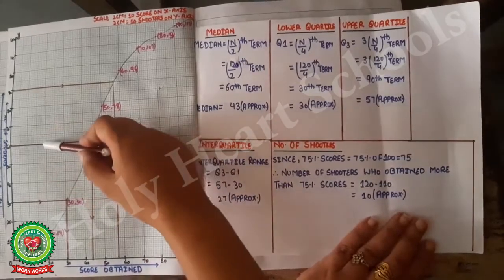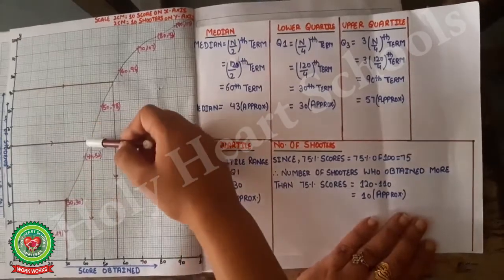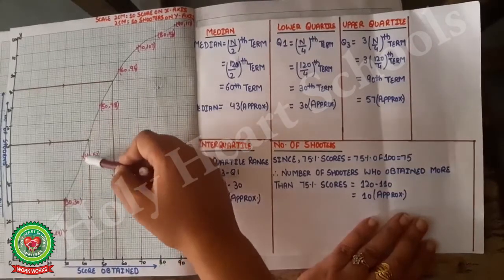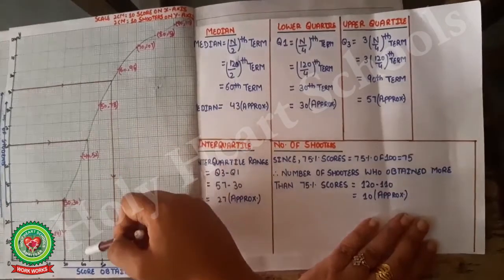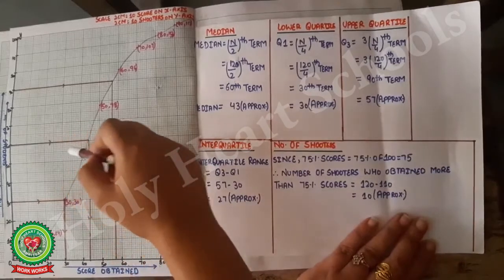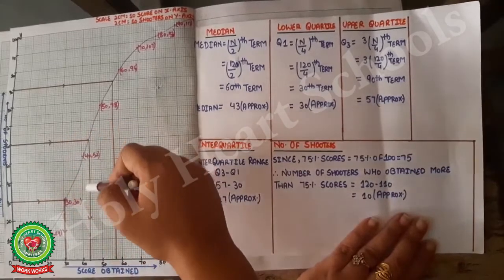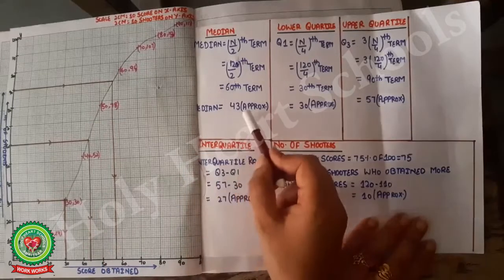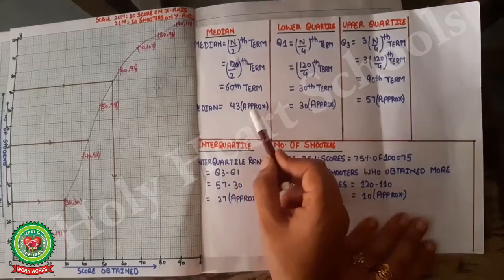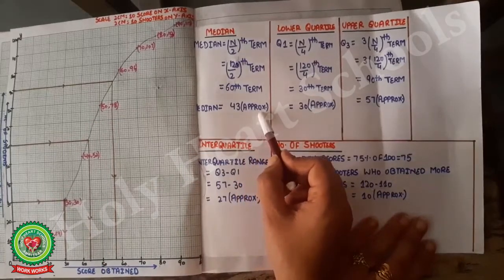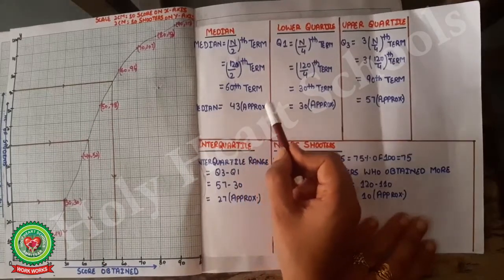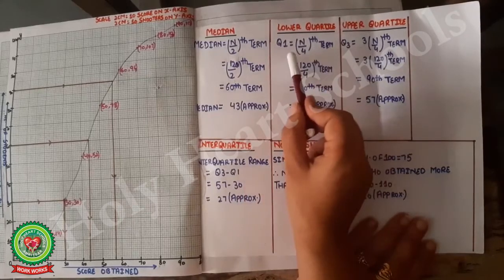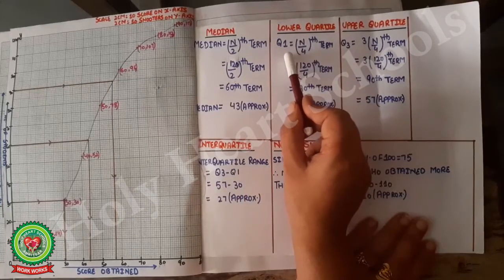To find the 60th term, we look from the graph going from up to down — the same way as done in the odd part. From 60 on the y-axis, draw the arrow down to meet the ogive curve, then read the x-axis value. The answer for median is approximately 43.